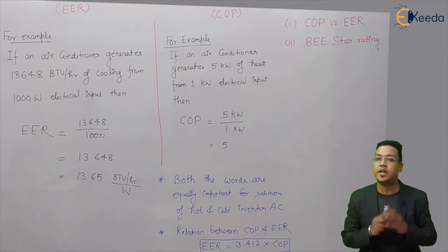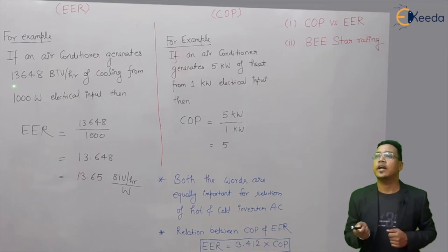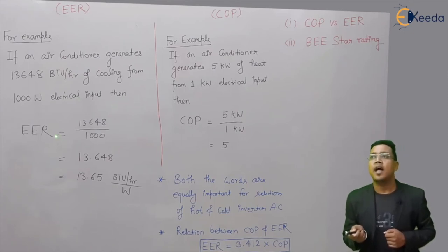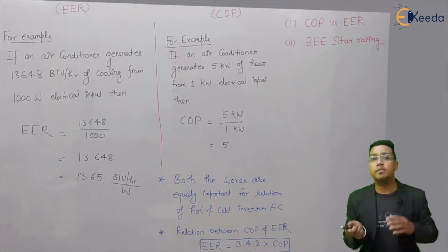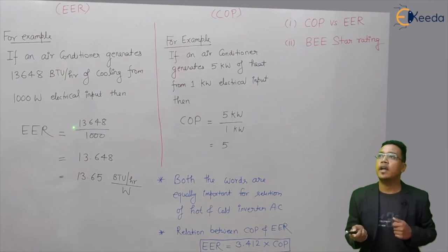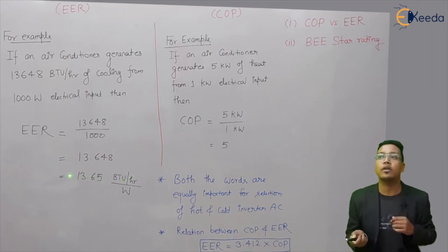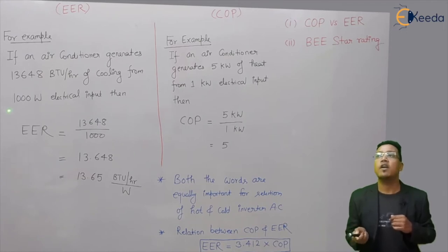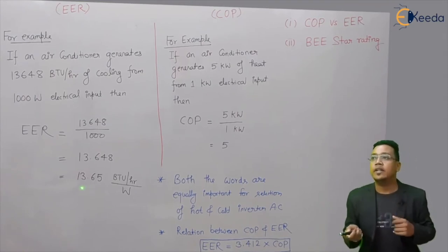Let us look at EER and COP with the help of one example. For EER: if an air conditioner generates 13,648 BTU per hour of cooling from 1000 watt electrical input, then EER equals 13,648 divided by 1000, which gives 13.65 BTU per hour per watt.